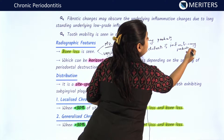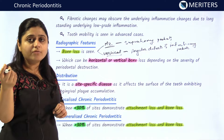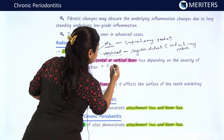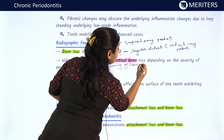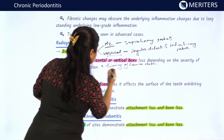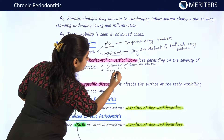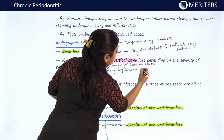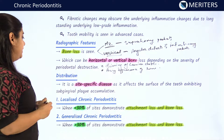Apart from bone loss, there may be disintegration of the lamina dura, with thinning of the lamina dura visible in radiographic appearance. The bone may also appear fuzzy — a fuzzy appearance of bone may be seen during periodontitis.